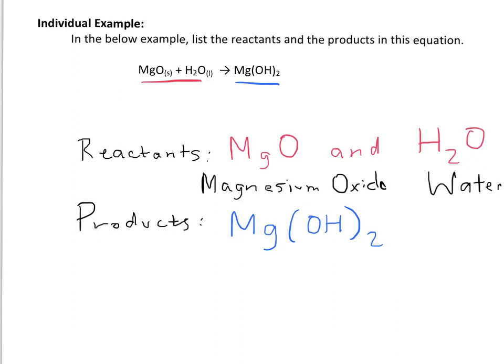And for our product, we have to remember that OH is the polyatomic ion called hydroxide. So we could name this product, Mg(OH)2, with the name of the metal, magnesium, and then the name of the polyatomic ion OH, which is hydroxide.